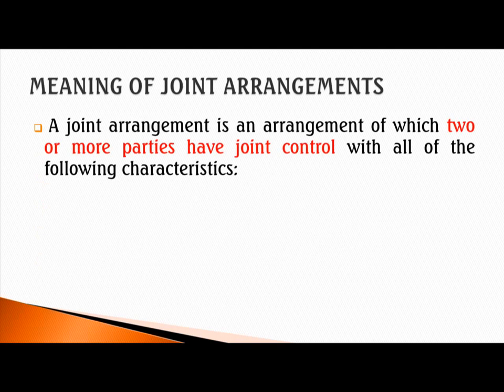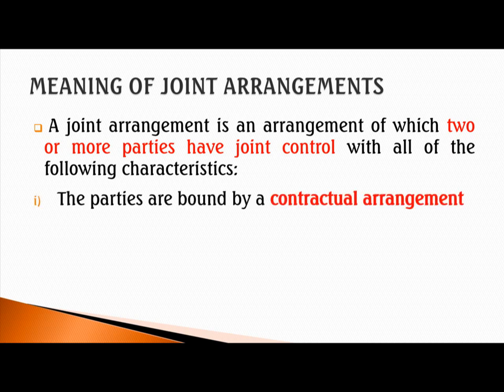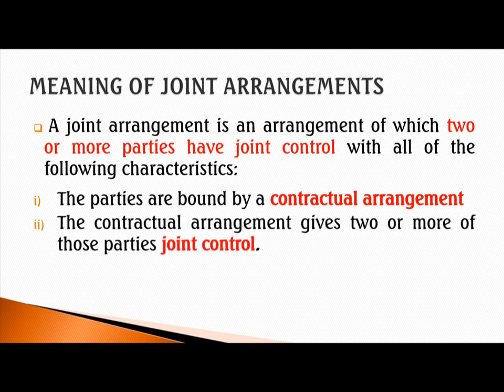What is a joint arrangement? A joint arrangement is a mechanism where two or more parties, in whom joint control has been invested, establish a venture, an outlet, an entity, or a financial structure with the aim of accomplishing certain ends. This arrangement must have two key characteristics: first, the parties must be bound by the terms and conditions of a contract; and second, there must be joint control.